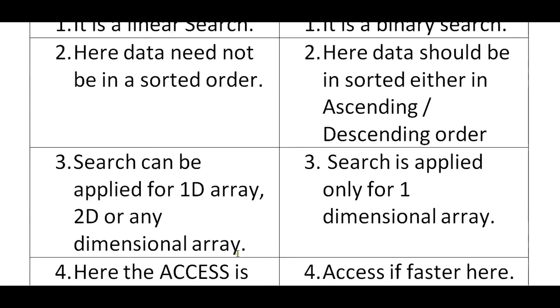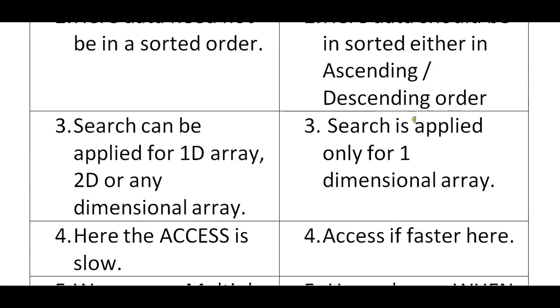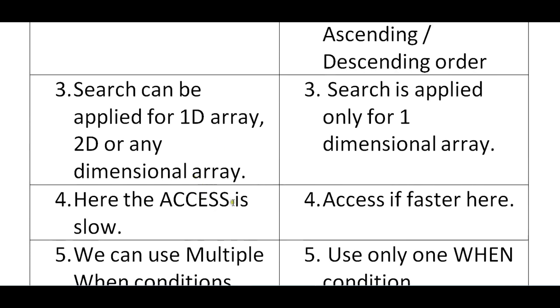Search all is faster than search. Why? Because the data is already sorted in order and either that is either in ascending order. That makes the search faster. And it is mainly only used for one dimensional. Here we can use one dimensional, two dimensional, multi dimensional.